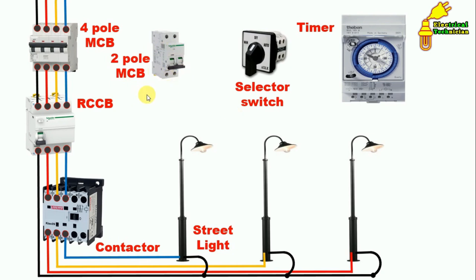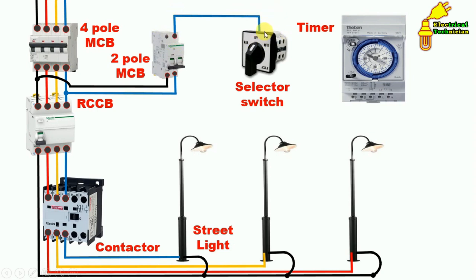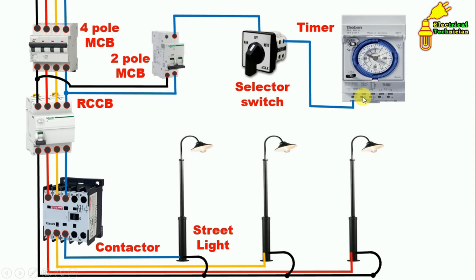For control wiring, first provide input power supply to the control MCB — connect a wire for phase supply and a wire from the neutral terminal. From the outgoing terminal of the MCB, connect a wire to the common terminal of the selector switch. Put the selector switch in auto position, and from the terminal where we get continuity, connect a wire to the NO contact or common terminal of the timer.